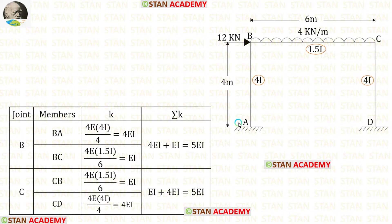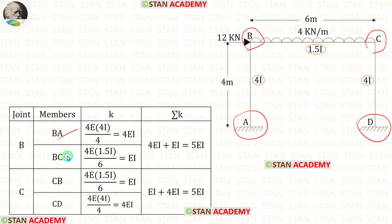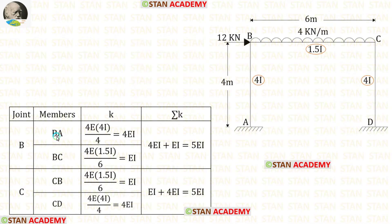In this frame both ends are fixed, and points B and C are continuous. So for the stiffness of BA, BC, CB, and CD we have to use the formula 4EI upon L. First let us find the stiffness for BA. The length of BA is 4, and the moment of inertia is 4I. So in the formula instead of I we have to apply 4I.